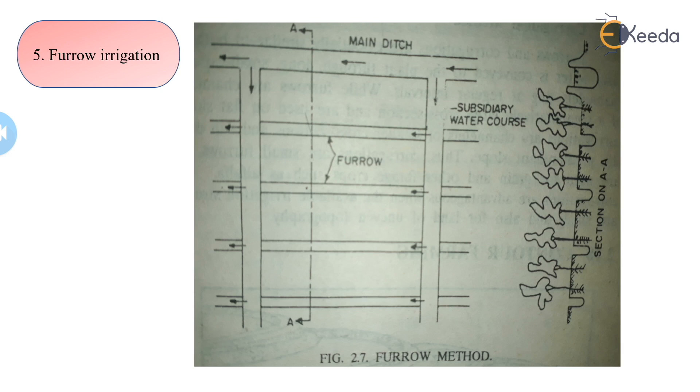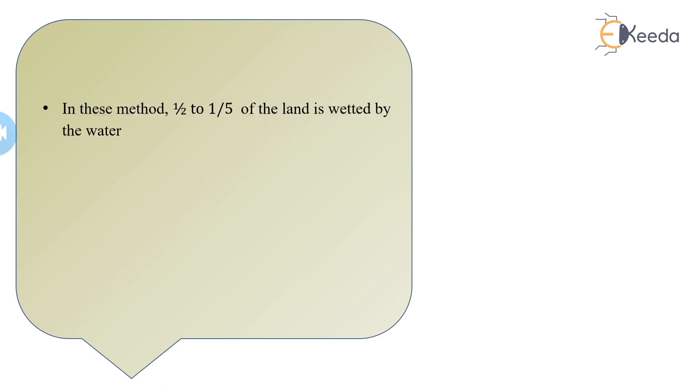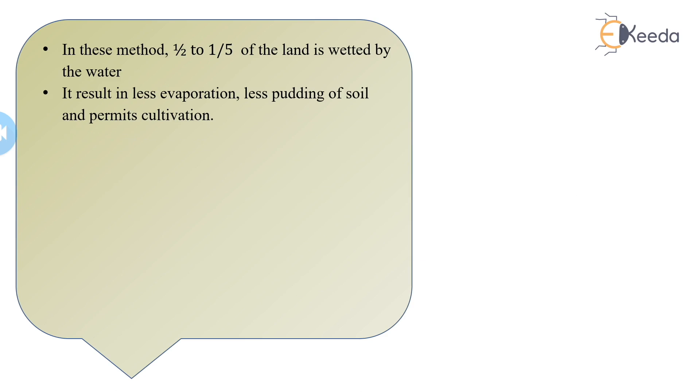In this method, only one-half to one-fifth of the surface is wetted, and hence the evaporation losses are very much reduced. It results in less puddling of soil and permits cultivation properly.